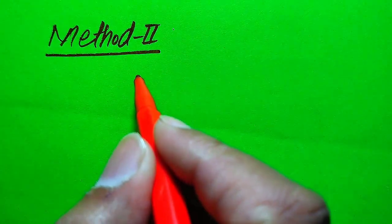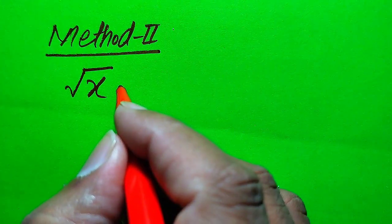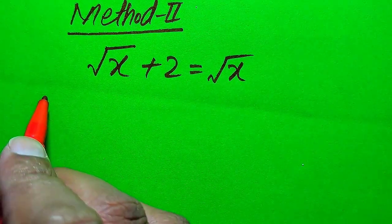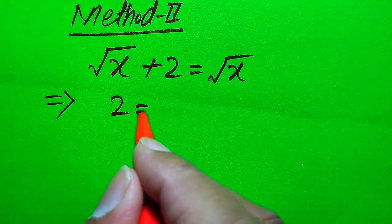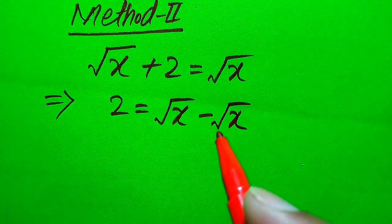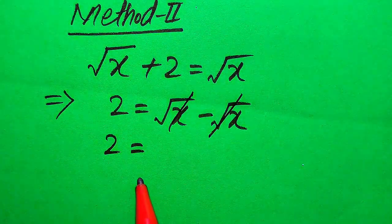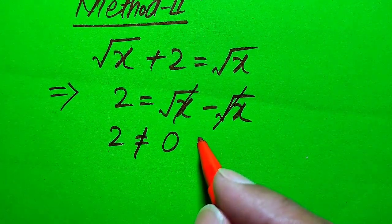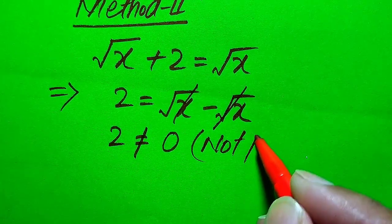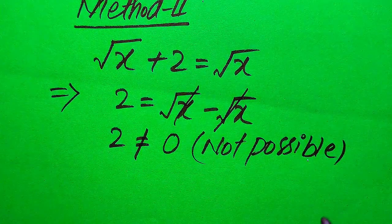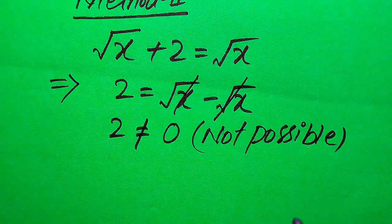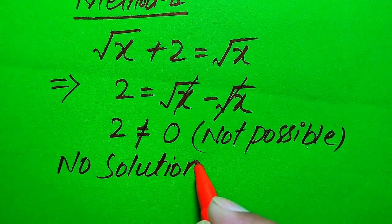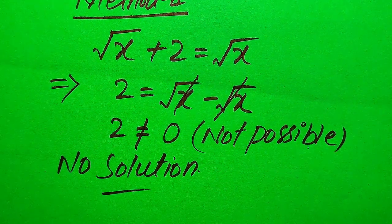Now we solve this problem using the second method. The given equation is: square root of x plus 2 equals square root of x. The second method is very quick. We move the square root of x to the left-hand side, giving us: square root of x plus 2 minus square root of x equals 0. The positive and negative square root of x terms cancel, leaving 2 equals 0. Since it is not possible that 2 equals 0, we cannot get any value of x satisfying the equation. We again conclude: this equation has no solution.